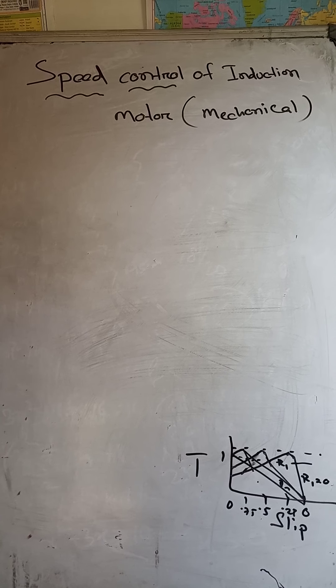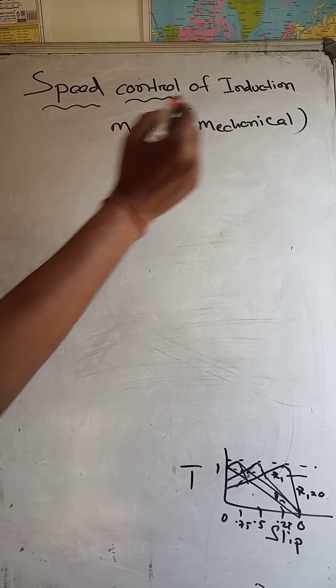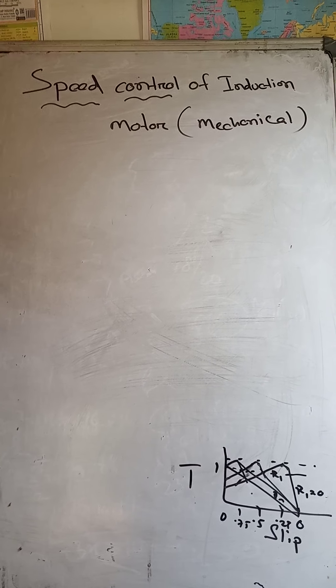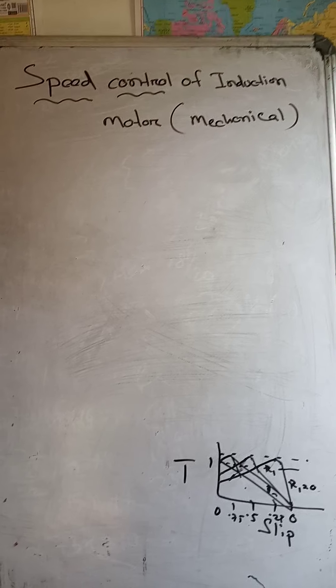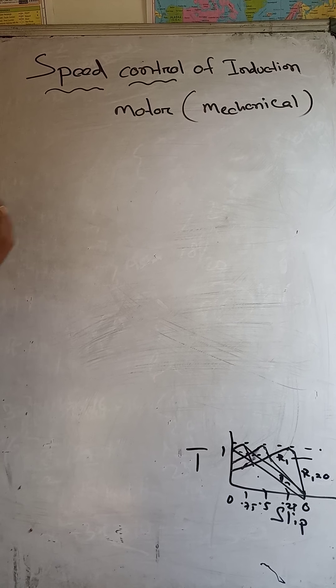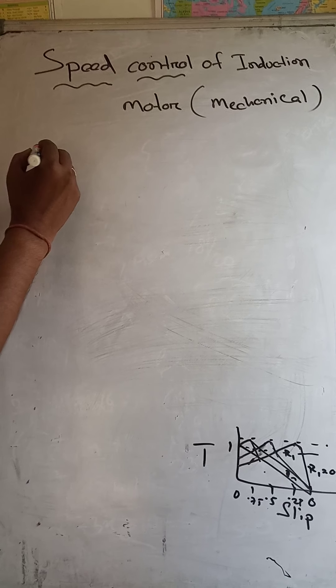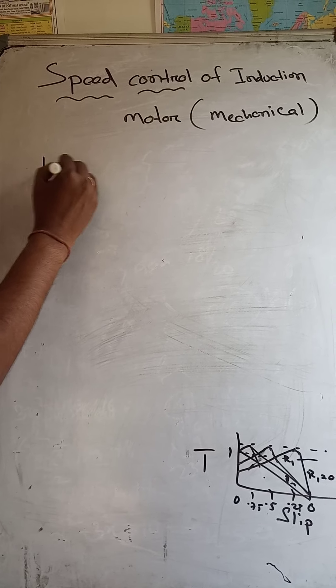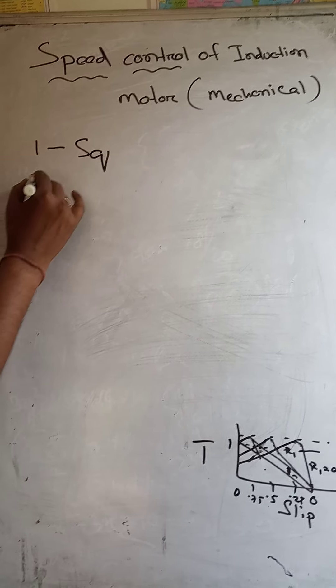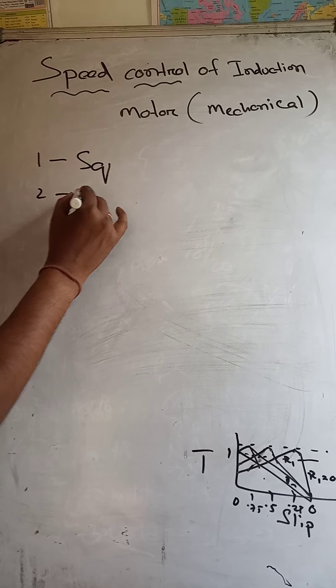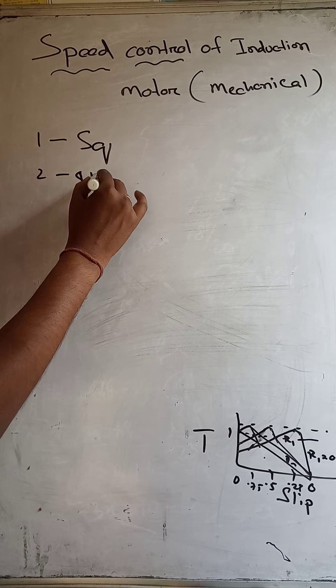We are discussing the speed control of induction motor mechanically. This is the oldest method of speed control. We know induction motors are of two types: squirrel cage induction motor and slip ring induction motor.